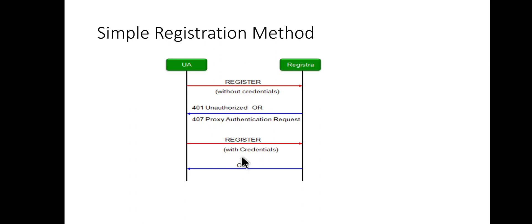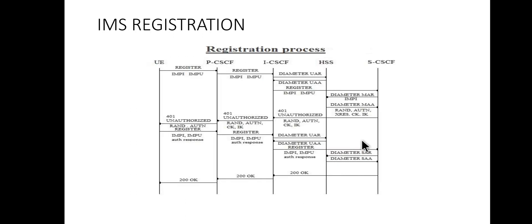Now we will look at IMS registration including all nodes. As you can see here, we have the UE, P-CSCF, I-CSCF, HSS, and S-CSCF. The UE will register to the S-CSCF, so it will send a REGISTER message toward the S-CSCF.